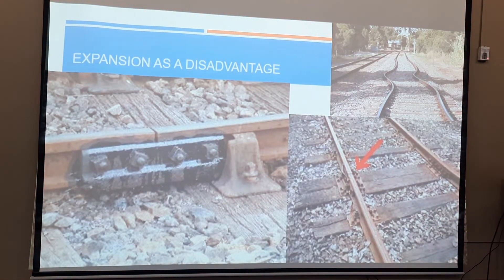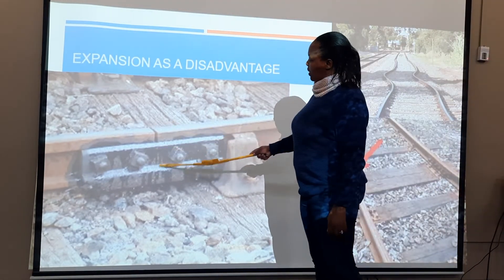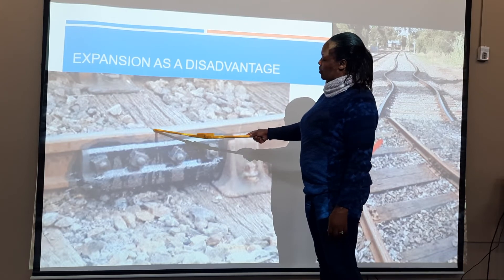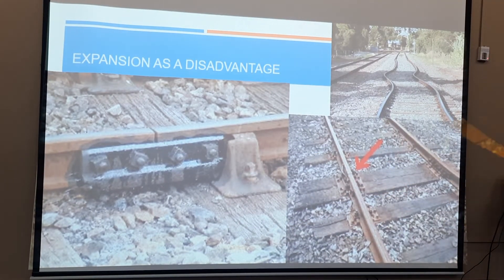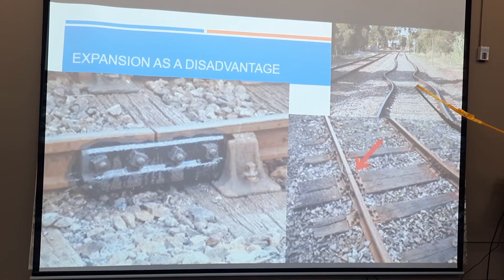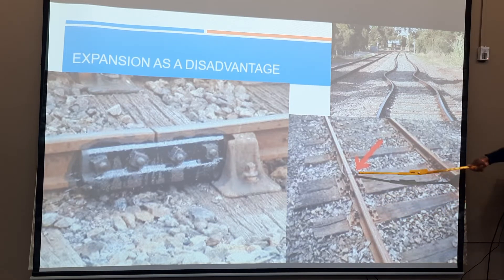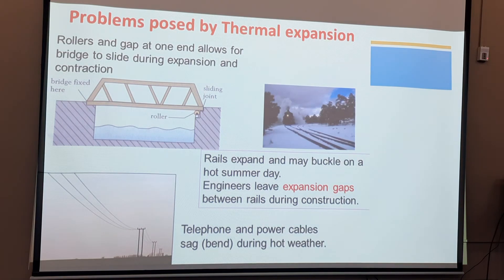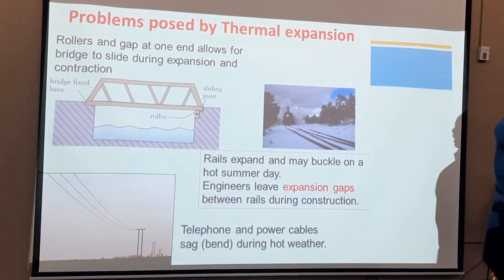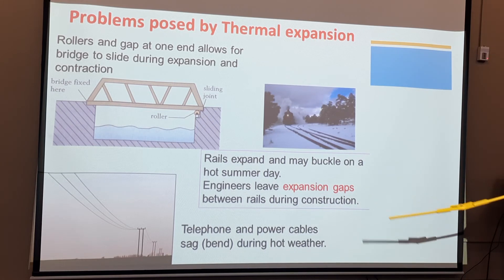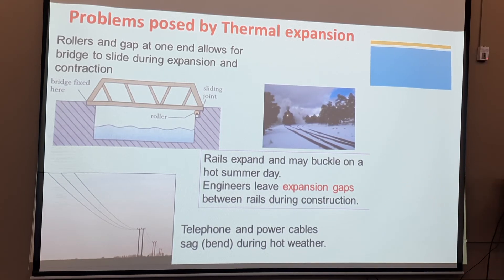Looking at pictures of what we discussed: on the railway line, there are short pieces joined together with clearance in between, allowing parts to expand or contract without bending or buckling. If it were one long piece, it would deform during the heat of the day. The bridge on rollers allows it to roll back and forth for expansion. Telephone and power cables have sag during hot weather, and engineers leave expansion gaps between rails during construction.